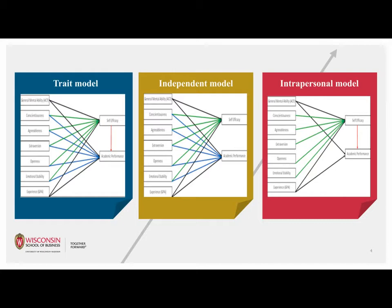We conceptualize and test three models. In the trait model, performance is affected directly by the Big Five Traits and self-efficacy, as well as indirectly by the traits through self-efficacy. This model was tested by Judge and his colleagues, who reported that self-efficacy loses its performance predictiveness in the presence of the Big Five Traits — a finding at odds with much prior research on self-efficacy.